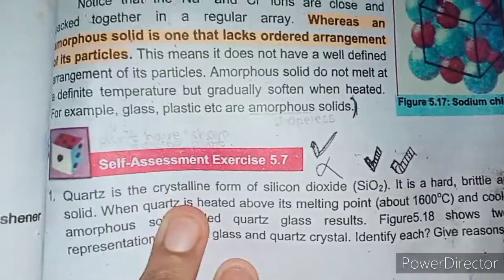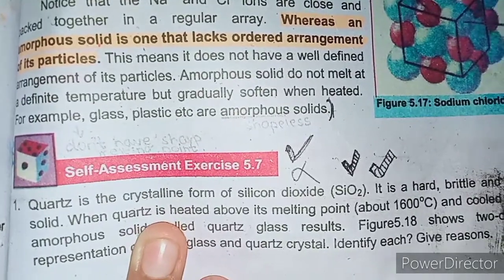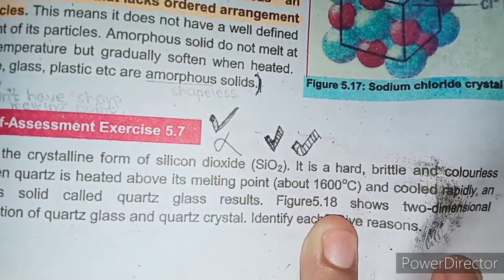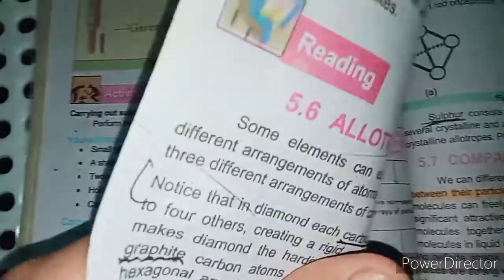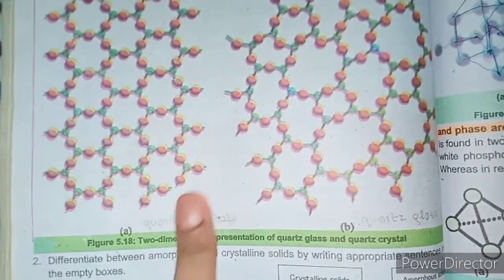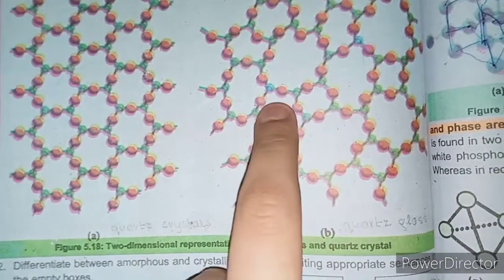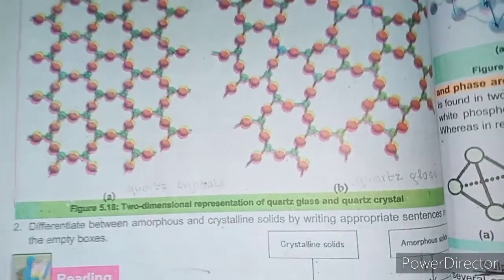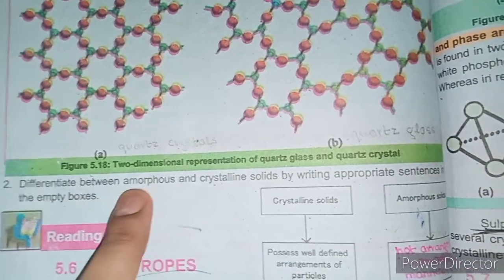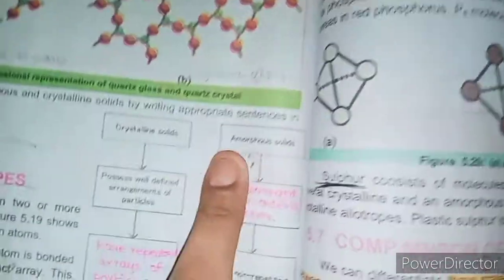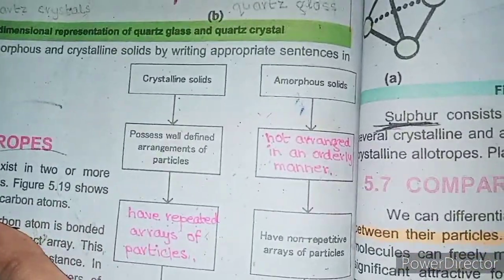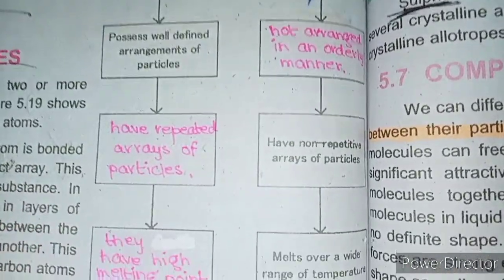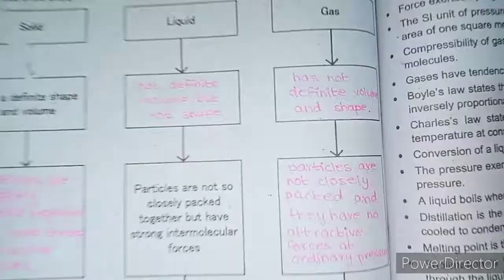Self-assessment 5.7 में quartz crystal और quartz glass की बात हो रही है। Quartz crystal और quartz glass — आप देख सकते हैं इसकी molecules की arrangement और इसकी molecules की arrangement में थोड़ा फर्क है। Question number 2 है: Differentiate between amorphous and crystalline solids। अब ये properties में आपको बताई — आप note-down करके अपनी books पर fill-out कर लें।